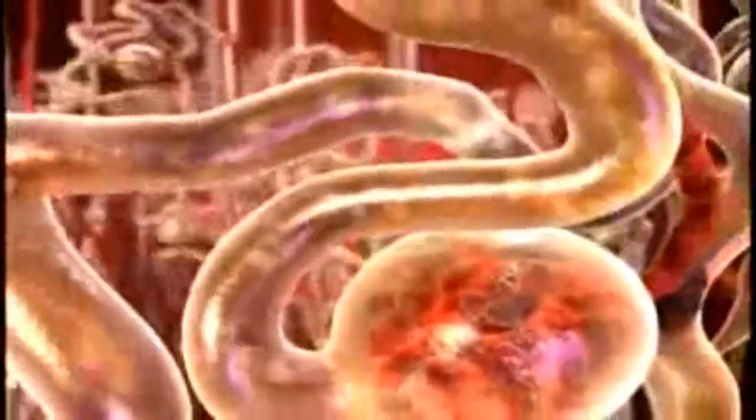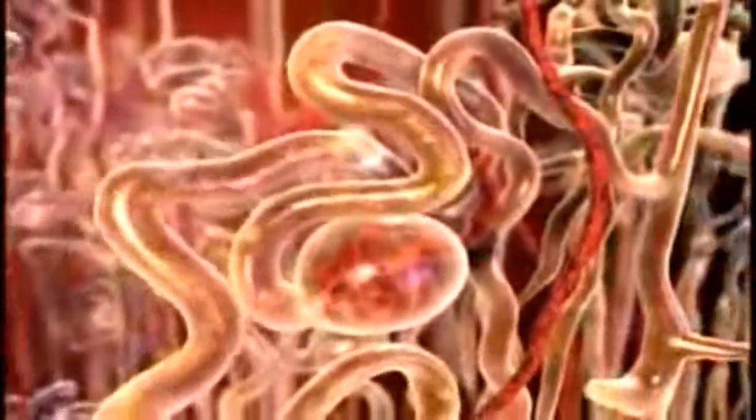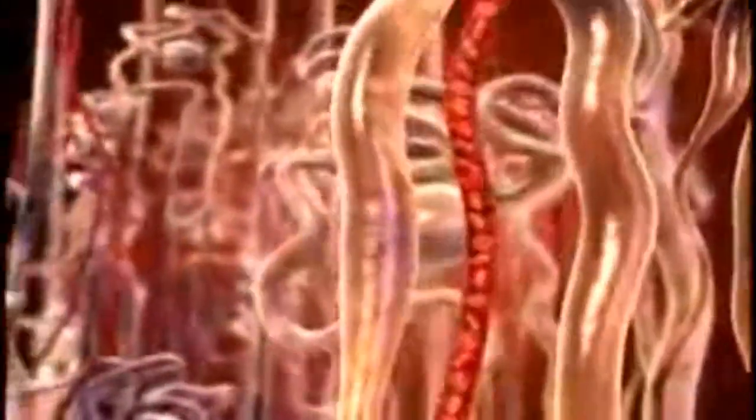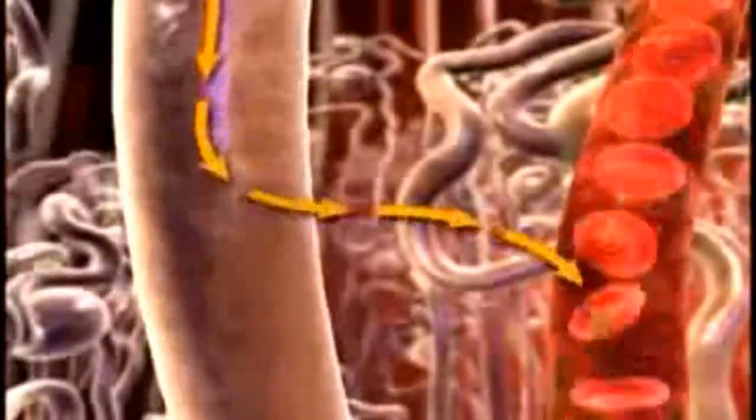The filtrate then diffuses across Bowman's space and into the tubule system of the nephron. In the tubules, some substances are added to the filtrate as part of the urine formation, and some substances are reabsorbed out of the filtrate and back into the blood.